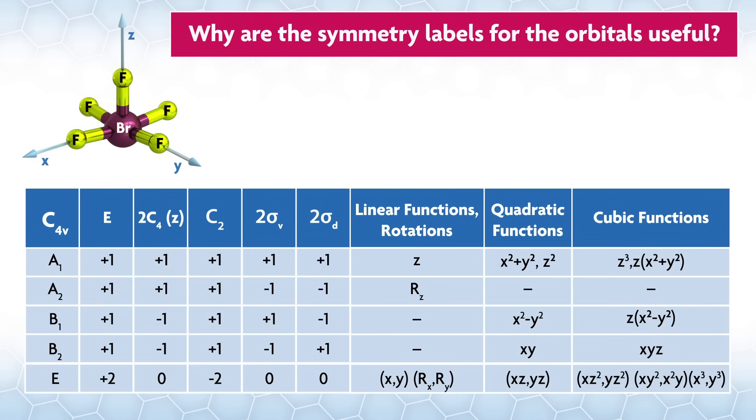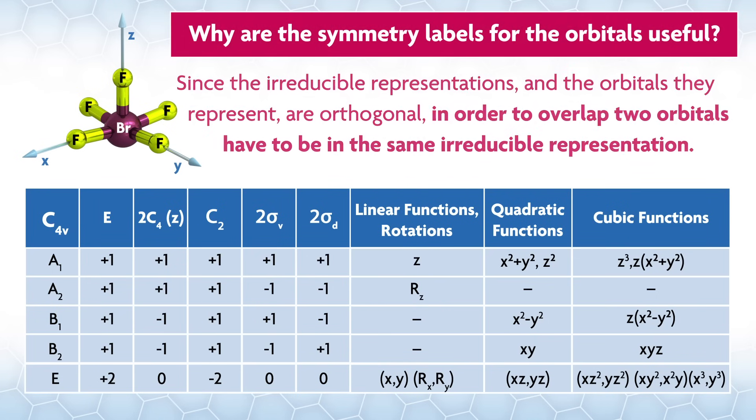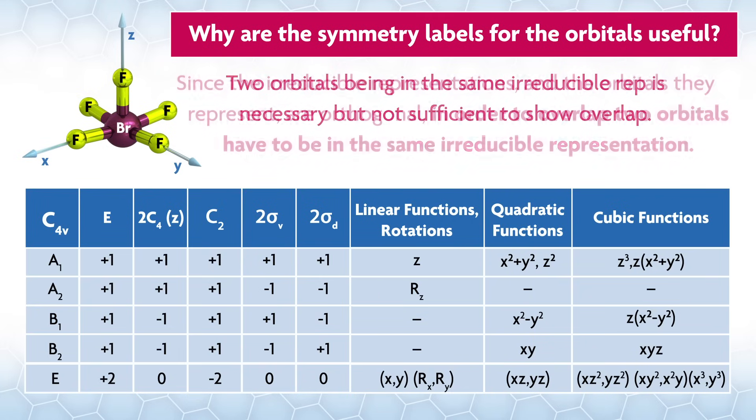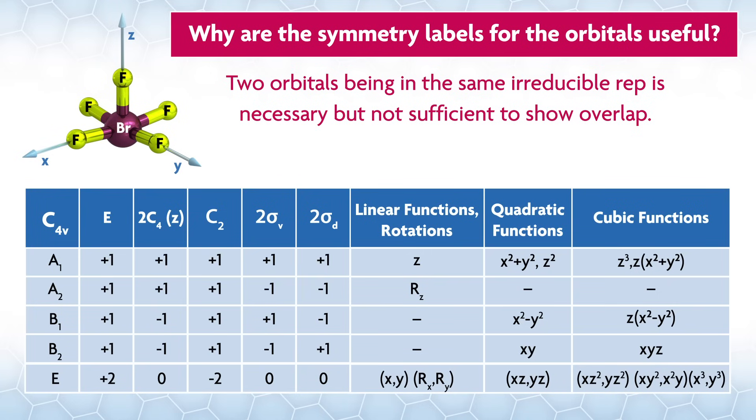Why are the symmetry labels for the orbitals useful? For example, since the irreducible representations and the orbitals they represent are orthogonal, in order to overlap, two orbitals have to be in the same irreducible representation. Two orbitals being the same irreducible rep is necessary but not sufficient to show overlap.